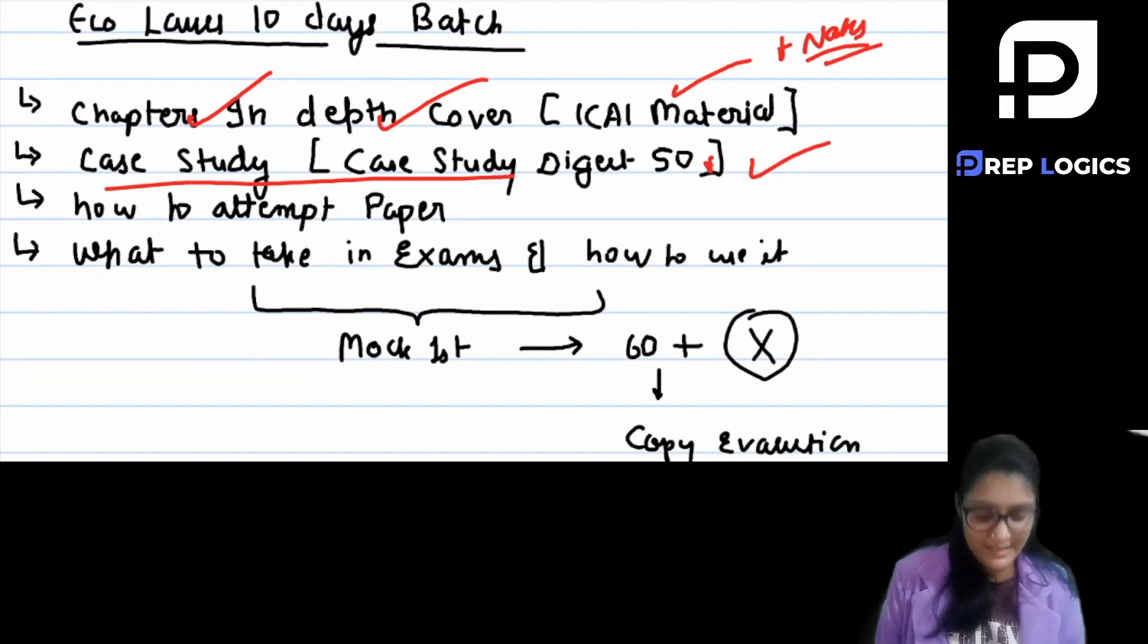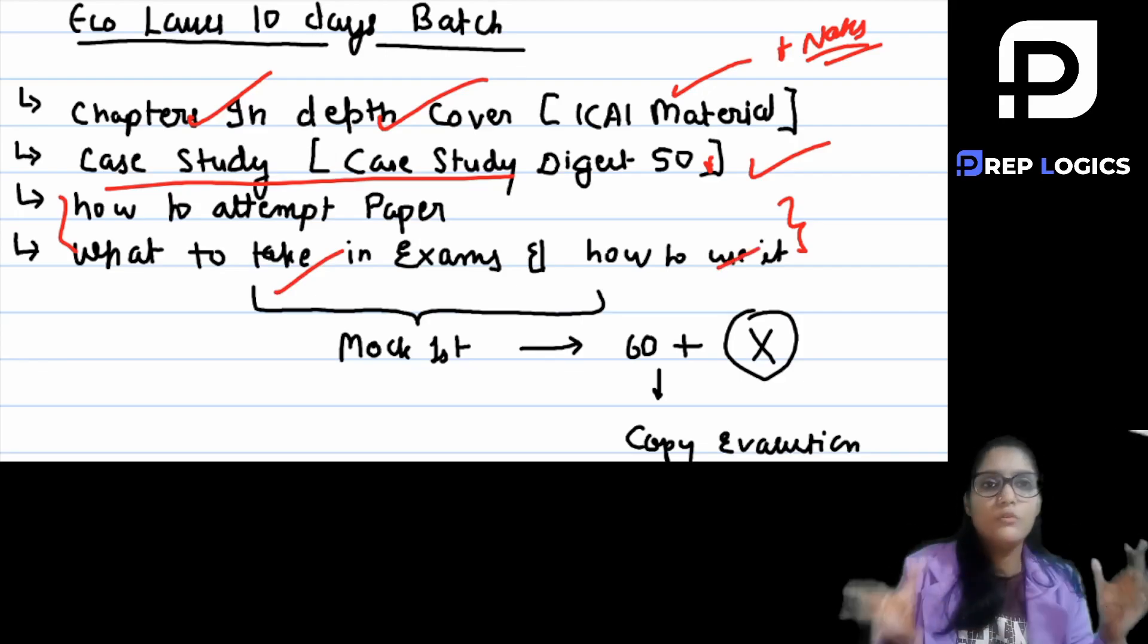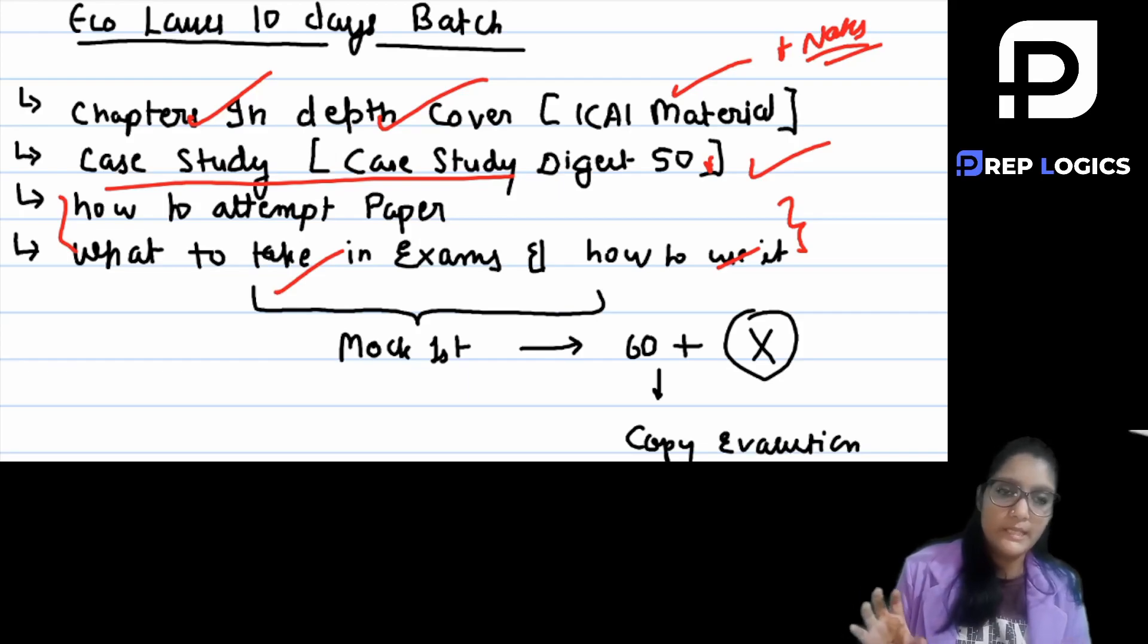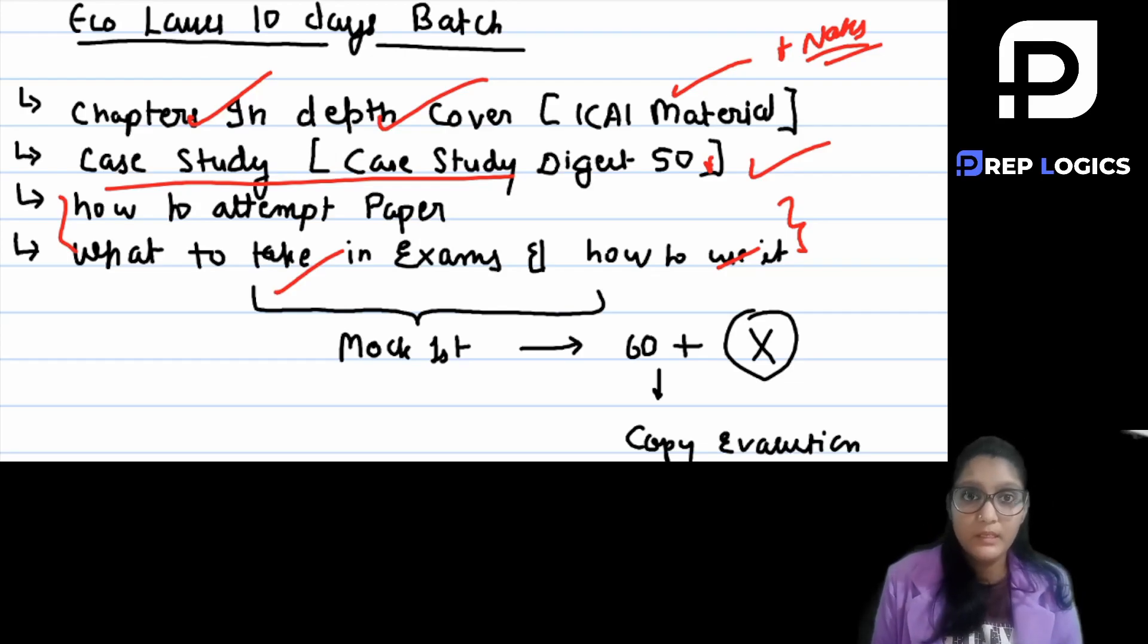We have a special class just for Economic Laws. That how you should attempt the paper, what to take into the examination, and how to use it. People take a lot of things but they don't know how to use it, how to find it. If you have 4 hours of the paper, you will find the questions and the time will go out because time is very limited. If you have given 4 hours in ICI, you will not get much time.